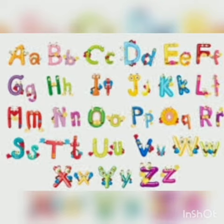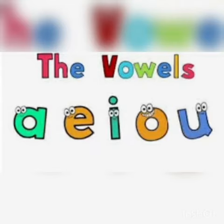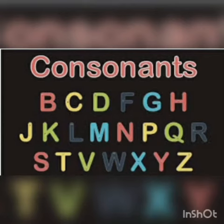Our alphabets are divided into two groups: the vowels — A, E, I, O, and U — and the next group is known as the consonants, that is B, C, D, F, G, H, and so on.